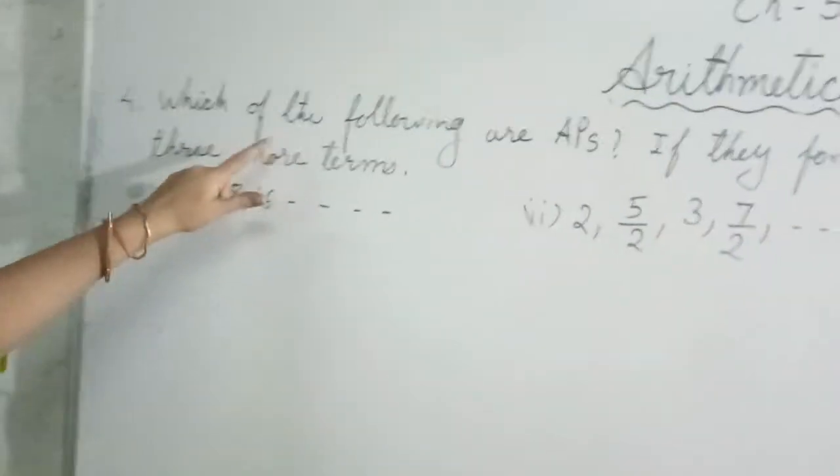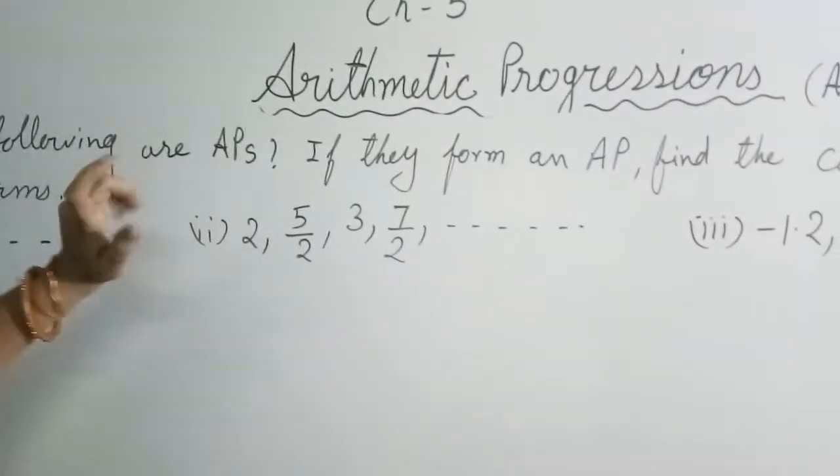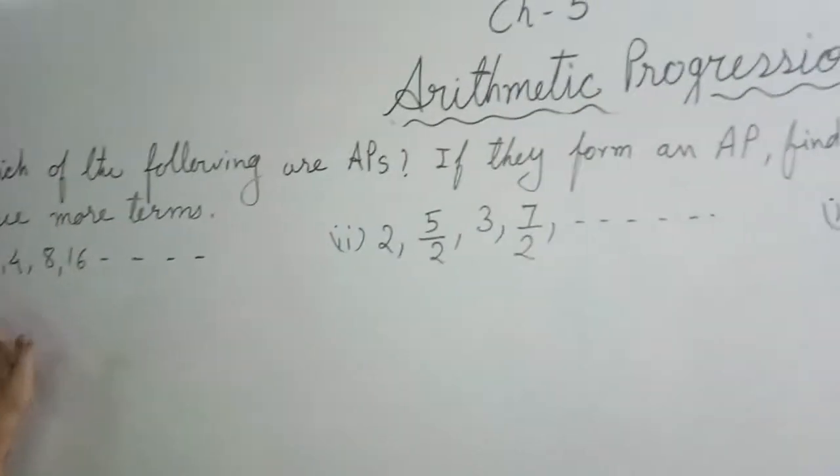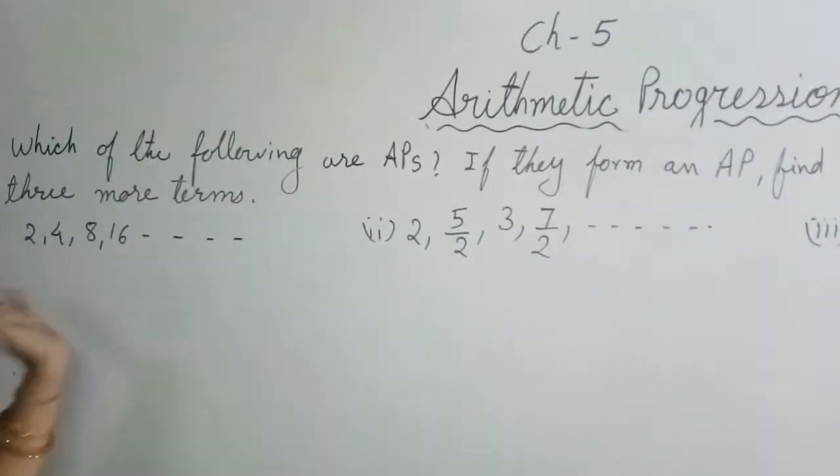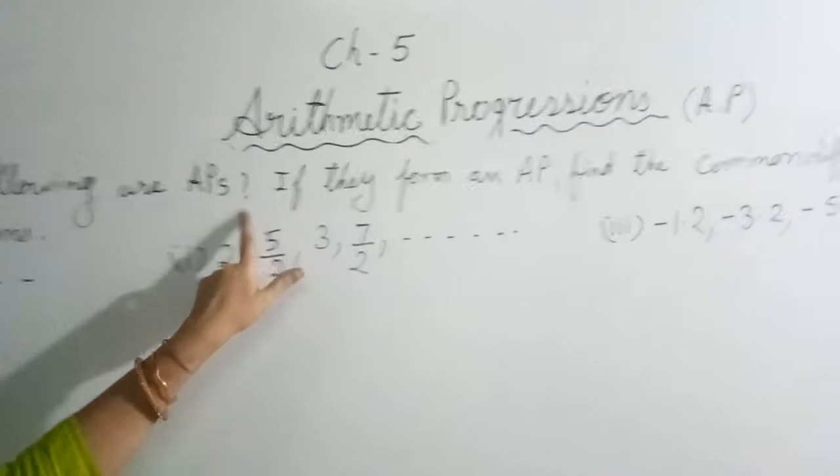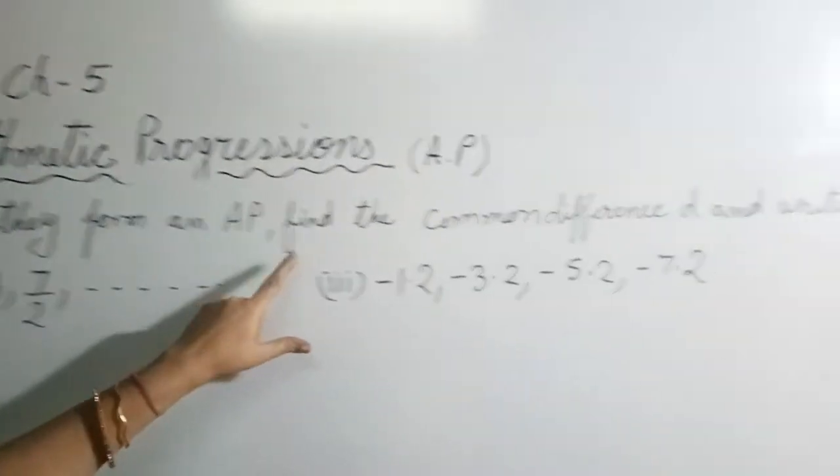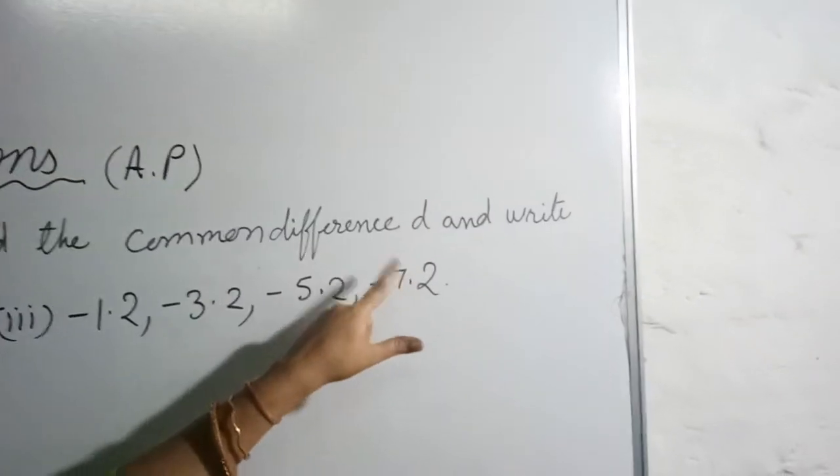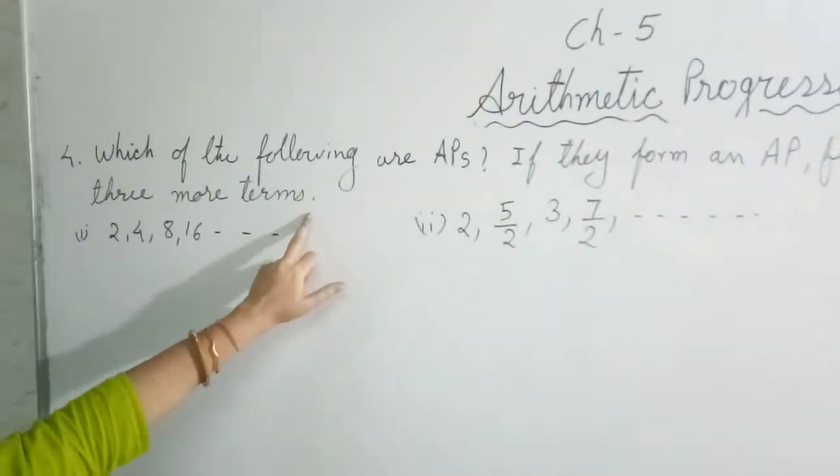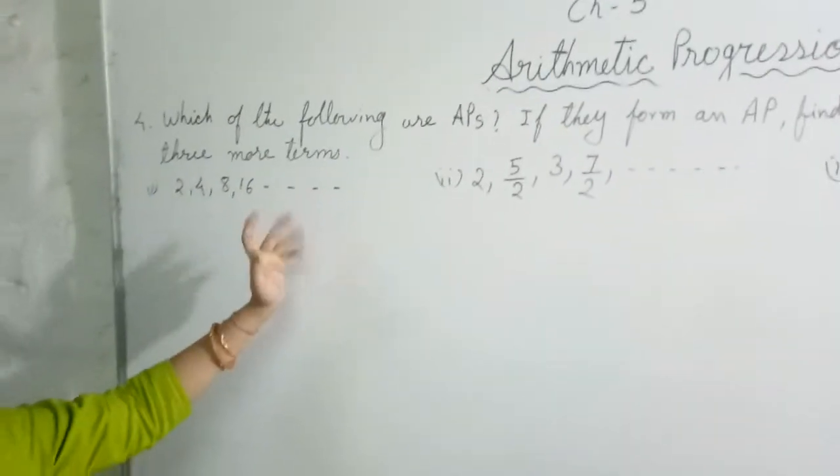In this question they are asking which of the following are APs. First we need to find out which are AP and which are not AP. If they form an AP, then find common difference D and write three more terms. Then you have to write three more terms.